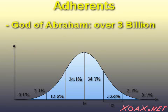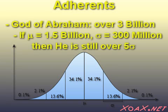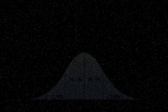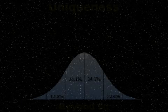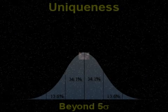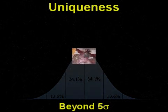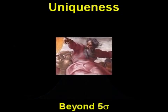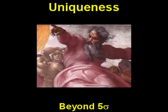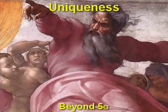Virtually any way you measure it, the god of Abraham is well beyond the 5 sigma level. This is true even if you choose a mean of 1.5 billion and a standard deviation of 300 million. It measures how unusual the occurrence is. It measures the likelihood that this god is not merely one among many, or an accident of men's minds, like other gods. In short, it gives us evidence that there is something special and unique about this god, the god of Abraham.